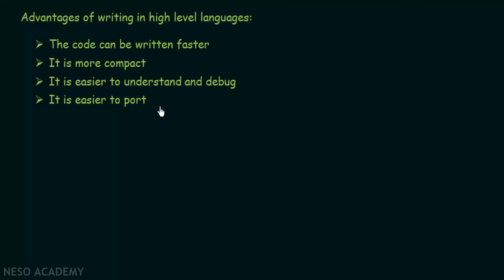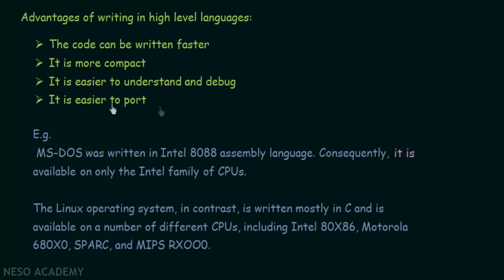Another advantage is that it is easier to port — to move the operating system from one hardware to another. Assembly language OS code is supported only on hardware with processors similar to the one it was written for. For example, MS-DOS (Microsoft Disk Operating System) was written in Intel 8088 assembly language and is therefore available only on the Intel family of CPUs.